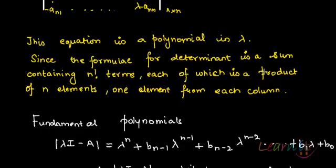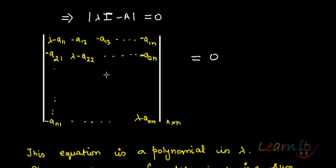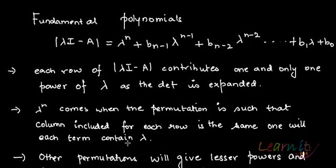The formula of determinant is a sum containing n factorial terms, each of which is a product of n elements, one element from each column. Lambda minus a11 gets multiplied to the determinant of the remaining portion, then minus of minus a12 getting multiplied with the determinant of the remaining columns and rows, and so on. That's how you find out your determinant.